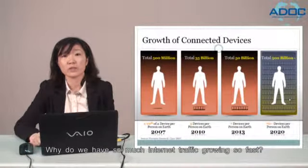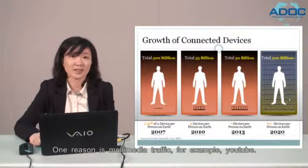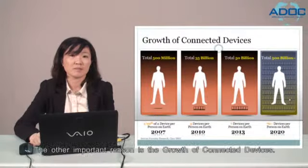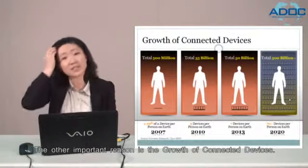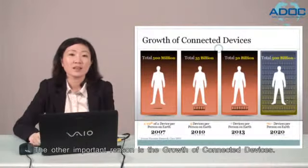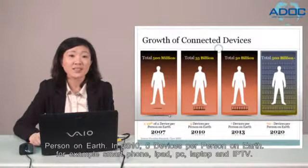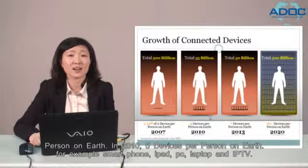Why do we have so much internet traffic growing so fast? One reason is multimedia traffic — for example, YouTube. The other important reason is the growth of connected devices. In 2007, only one-tenth of a device per person on Earth. In 2010, 5 devices per person on Earth.